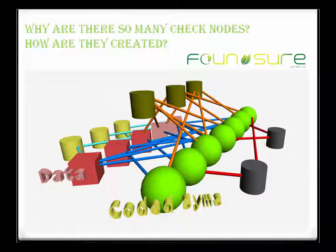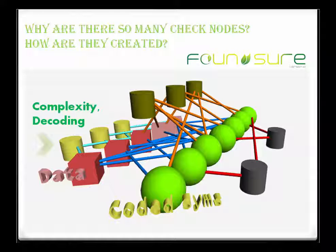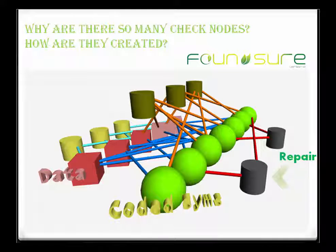We use checks for different main reasons, particularly for specific applications. The checks with yellow cylinders are typically used to manage the complexity and improve the decoding performance. This is a known technique in the fountain code community. If you look at raptor codes, you will find a lot of information about why we have this sort of checks.